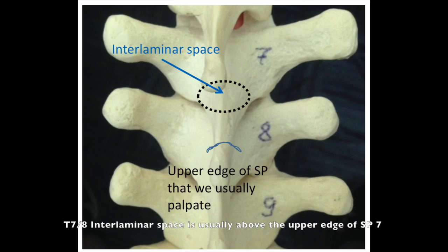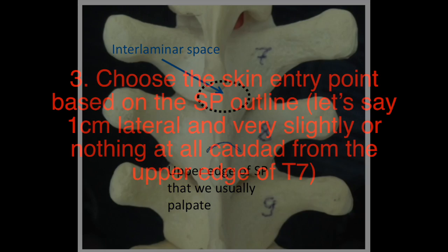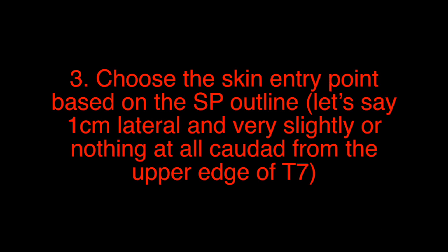The T7 to T8 interlaminar space is usually above the upper edge of spinous process number 7. Step 3: Choose the skin entry point based on the spinous process outline — approximately 1 cm lateral and slightly caudad, or nothing at all caudad, from the upper edge of T7.